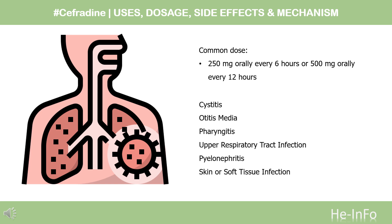Usual pediatric dose for bacterial infection — 9 months or older: 25–50 mg per kg per day in divided doses every 6–12 hours; maximum dose 4g per day. Usual pediatric dose for skin and structure infection — 9 months or older: 25–50 mg per kg per day in divided doses every 6–12 hours; maximum dose 4g per day. Usual pediatric dose for otitis media — 9 months or older: 75–100 mg per kg per day in divided doses every 6–12 hours; maximum dose 4g per day.